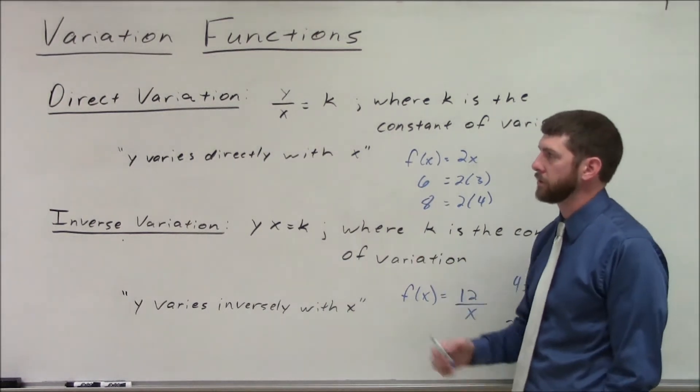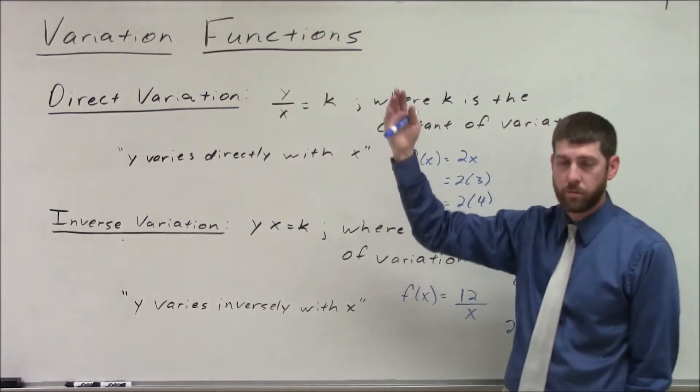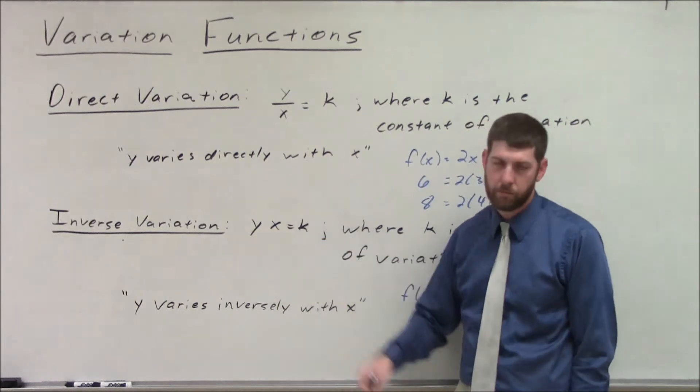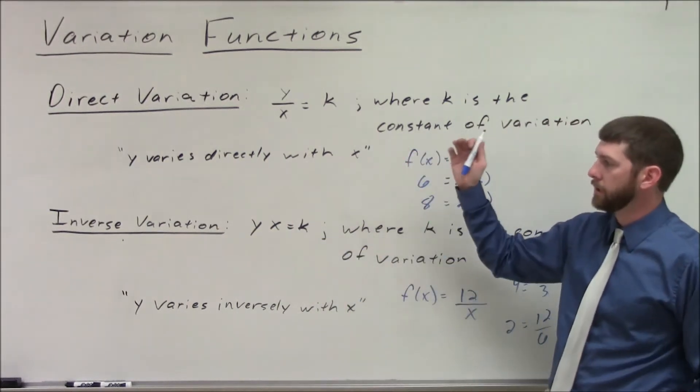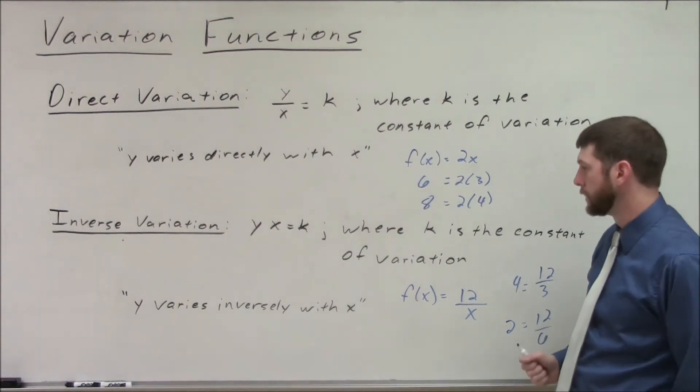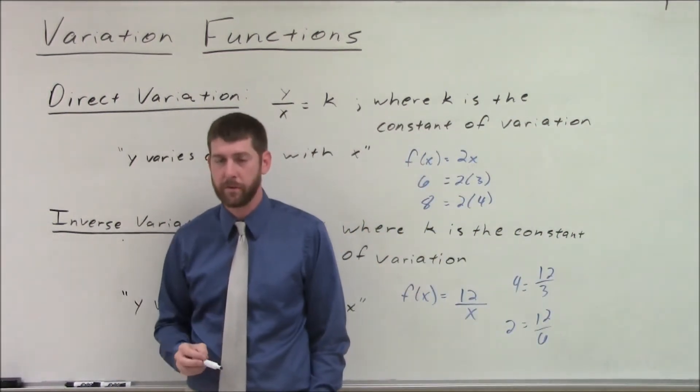So that's the relationship between direct variation, it's a constant ratio, as y increases, x has to increase, and inverse variation, we have a constant product, whereas y increases, x has to decrease, or vice versa. So give me a second, and I'll get the next two variation functions up here for you.